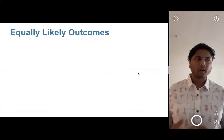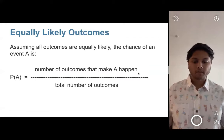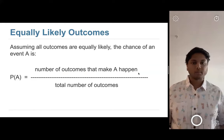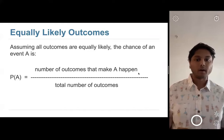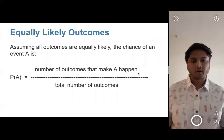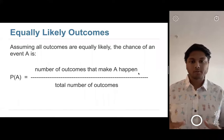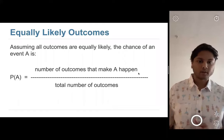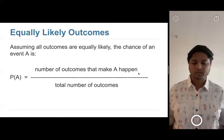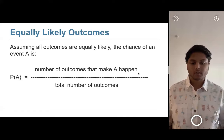The first way is: if you know that all outcomes are equally likely, you just count up the number of outcomes that result in the event you care about and divide by the total number of possible outcomes. We saw this when calculating the probability of drawing a queen-then-king from three cards (queen, king, ace). We wrote out all six possible two-card sequences and found only one results in queen followed by king, so the probability was one out of six.